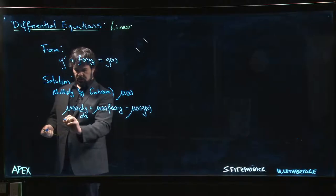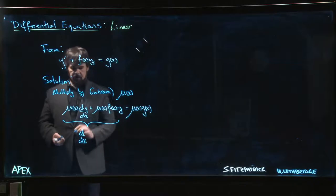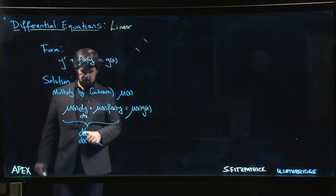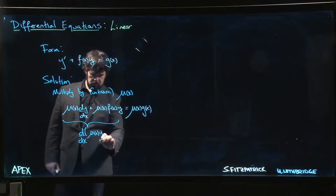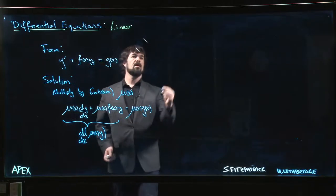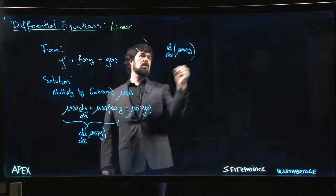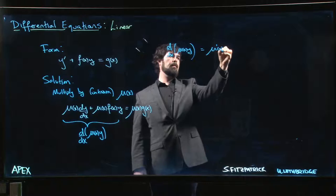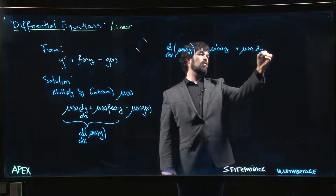So you multiply both sides, and this side here, what we want is we want this side to be the derivative with respect to x of some function. Well, I mean we can kind of see what it has to be. You have to be like mu of x times y. Why? Well, what happens if you take the derivative of mu of x times y? Well, product rule says you do the derivative of the first, mu prime times y, plus first times the derivative of the second, which is just mu dy/dx.